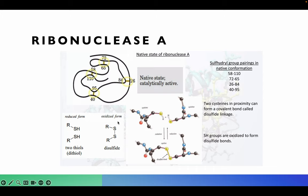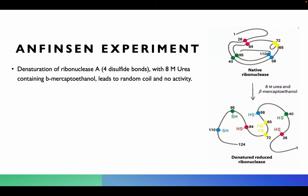The disulfide linkage is important for connecting and folding two regions of the protein by bringing two amino acids together. It is formed by two cysteine residues: one cysteine comes together with another, they remove the hydrogen groups, undergo oxidation, and form the disulfide bond. You can see the different positions in the protein where these disulfide linkages are present.